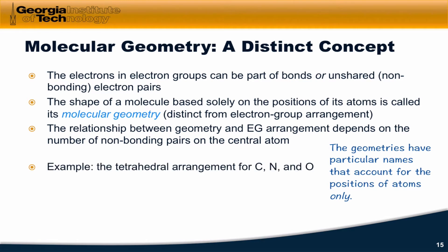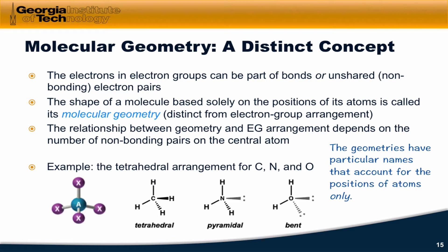As a quick example, let's consider the tetrahedral arrangement for three different atoms — carbon, nitrogen, and oxygen — surrounded by hydrogen atoms. Carbon forms four bonds, has a valence of four, and so its hydride is CH4, with four single bonds and four bonding pairs to hydrogens. This is the tetrahedral electron group arrangement, and it's what we'll call the tetrahedral geometry.